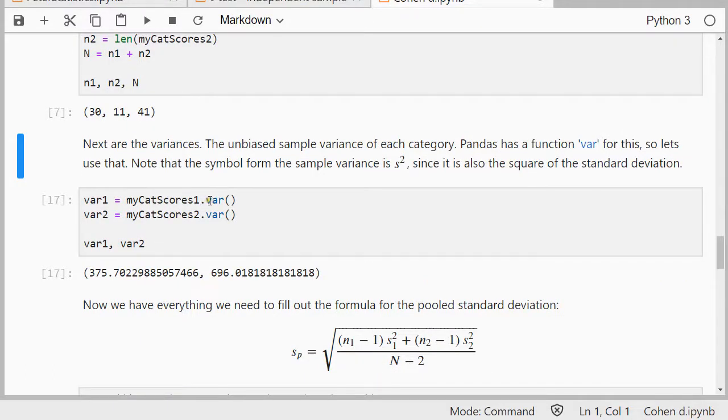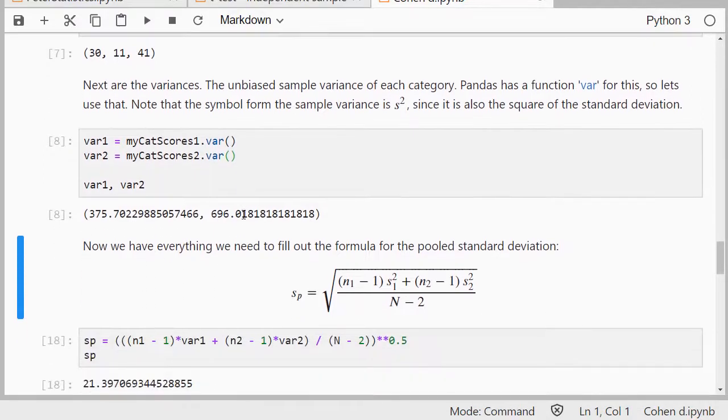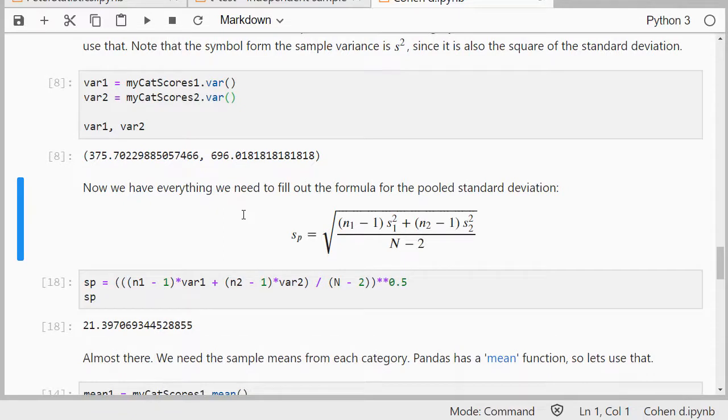Then for the variances, we can simply use pandas var for variance function there, so simply have dot var there, and that gives us the variance. And then we can finally fill out that pooled standard deviation formula, because we have everything now, we have that N1, we have those variances, so it's just a matter of writing that all out.